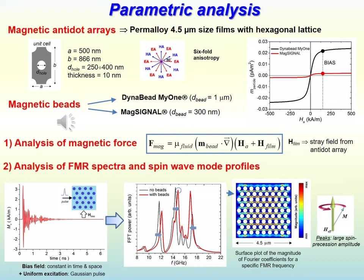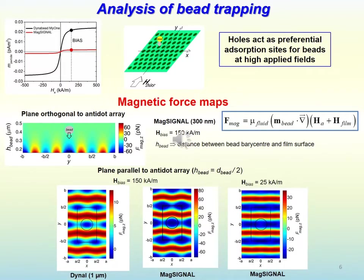Then we analyze the sensing mechanism by calculating the ferromagnetic resonance spectra, comparing the cases with and without bits absorbed on the surface of the antidot array film. The comparison is made in terms of ferromagnetic resonance frequencies and spin wave mode profiles. The analysis is performed by setting the bias field along the Y-axis, which corresponds to the easy axis for the considered antidot array, while the excitation is a Gaussian pulse along the X-axis, which corresponds to the hard axis for the lattice.